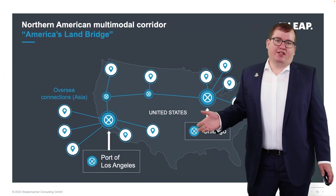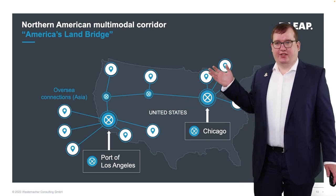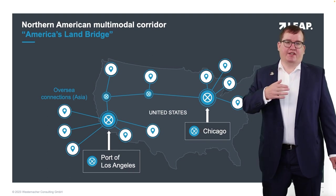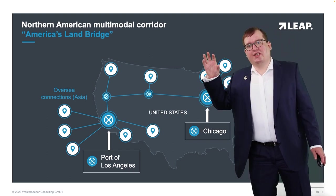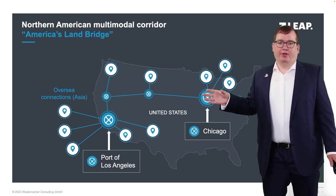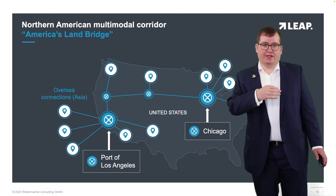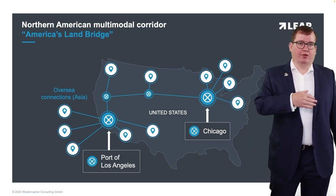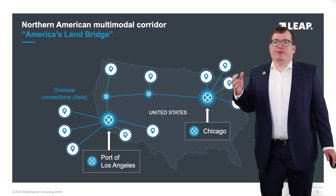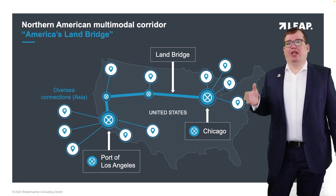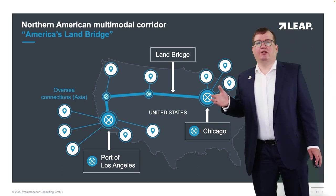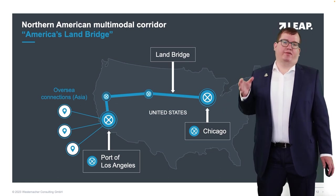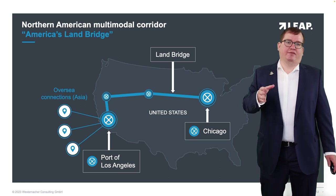We see the Port of Los Angeles as the first hub on the West Coast down south, and Chicago as another hub nearly to the East Coast. We see spokes — the overseas connections to Asia, for example — and spokes on the eastern part to the East Coast from Chicago, and some overseas connections to Europe or Canada. We also see the land bridge: the main spoke in the United States with two hubs in between, going from Port of Los Angeles via Sacramento and Denver to Chicago.